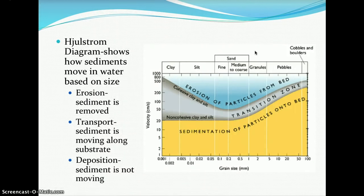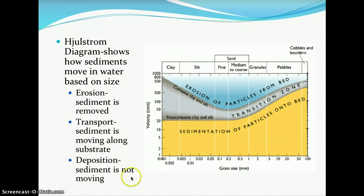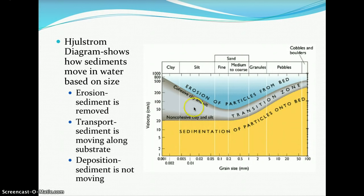The Hjulstrom diagram shows how sediments move in water based on their size. Erosion removes sediment; transport moves sediment along the substrate — the bottom of the ocean floor, river, or in suspension; and deposition is where sediment is no longer moving. Here you can see erosion of particles from the bed, the transition zone with non-cohesive clay and silt, and then the sedimentation of particles back into the bed.